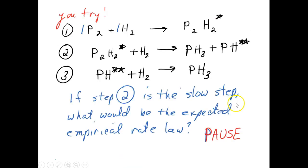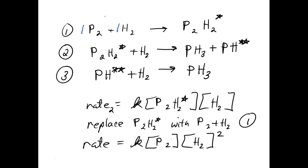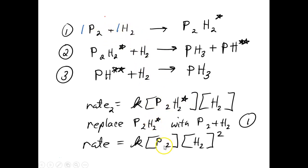Why don't you try this one? If step two is the slow step, what would be the expected empirical rate law? We take our slow step and write the rate expression, but the empirical rate law can never have the intermediate in it. So we go back to where that intermediate appeared and replace it with the reactants it depends on — p2 times h2. When we put it all together, it'll be p2 times h2 times h2, or p2 times h2 squared.